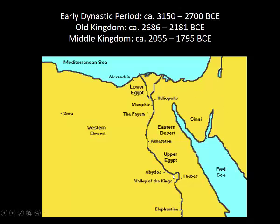The other important thing to consider is the political situation, because it determines the type of art commissioned during a certain period. For the Egyptians, power was consolidated into one ruler — the Pharaoh — who ruled over the entire area. The Egyptians felt their history began when the first Pharaoh unified Upper and Lower Egypt. The naming of Lower and Upper Egypt has to do with the direction the Nile flows.